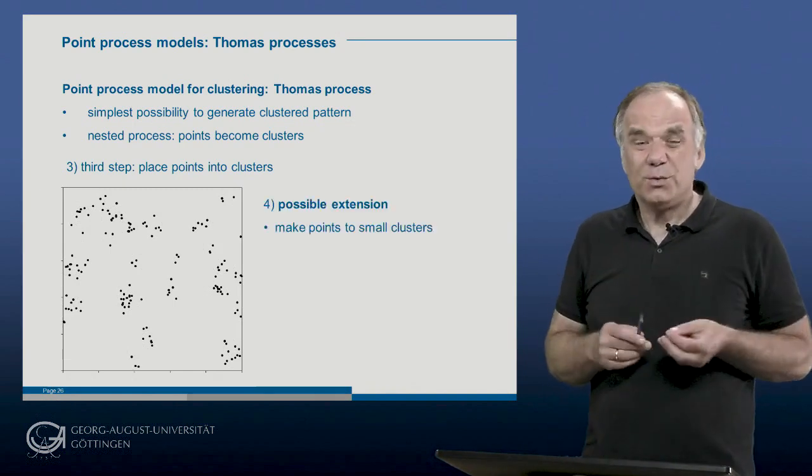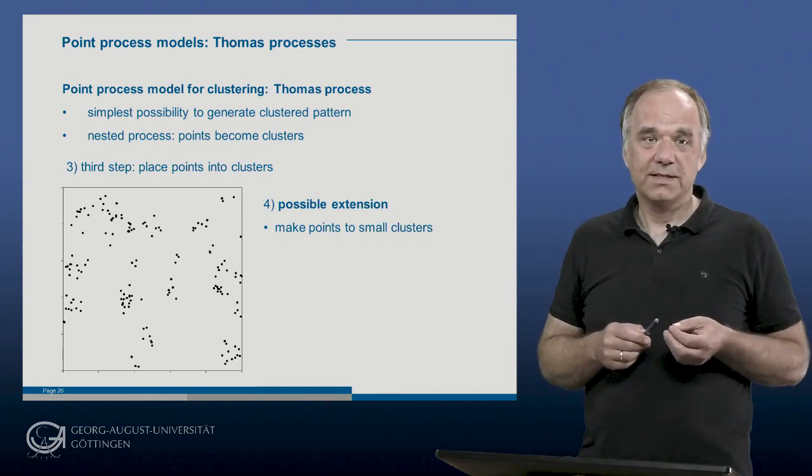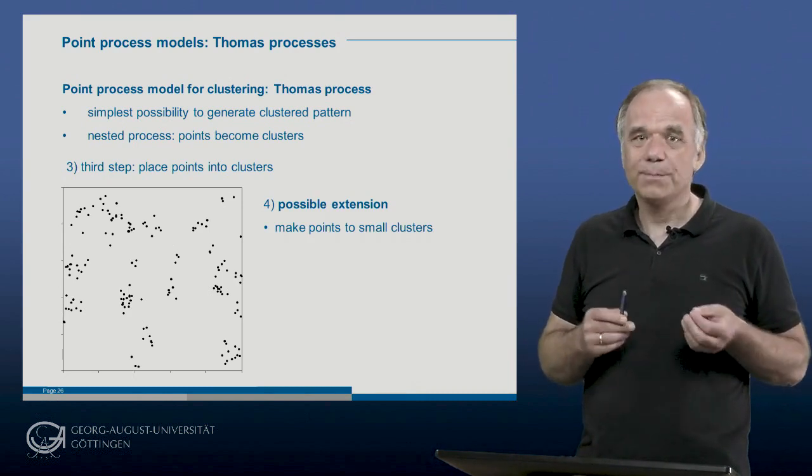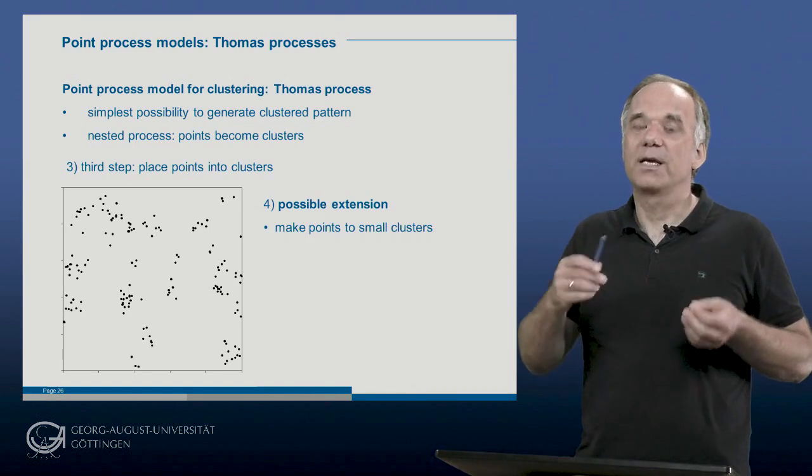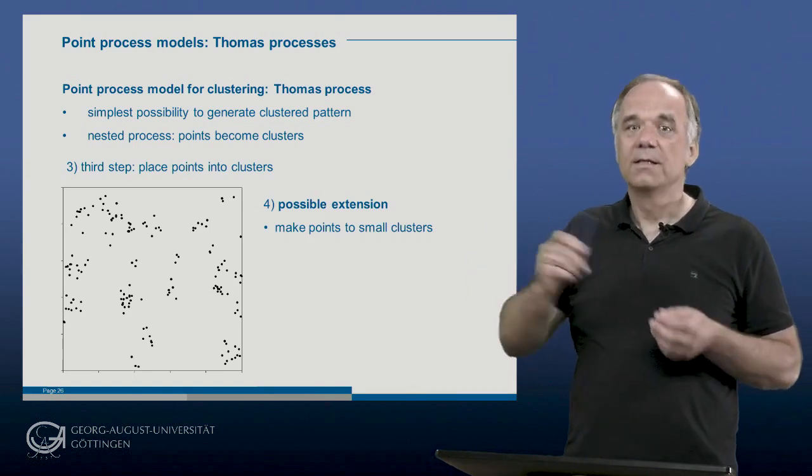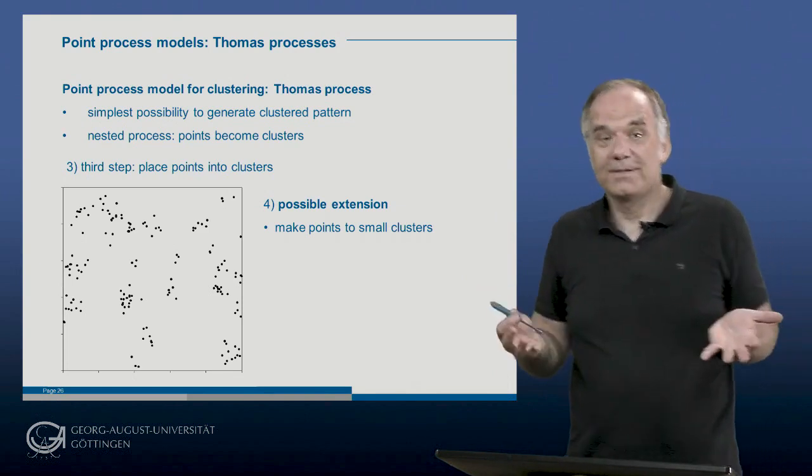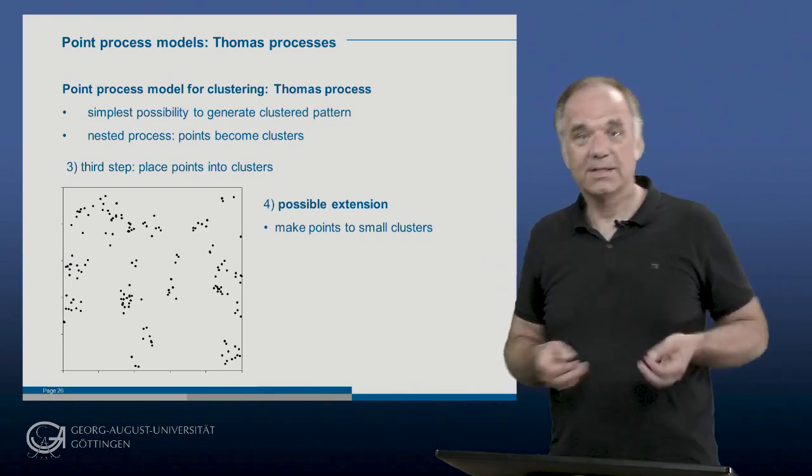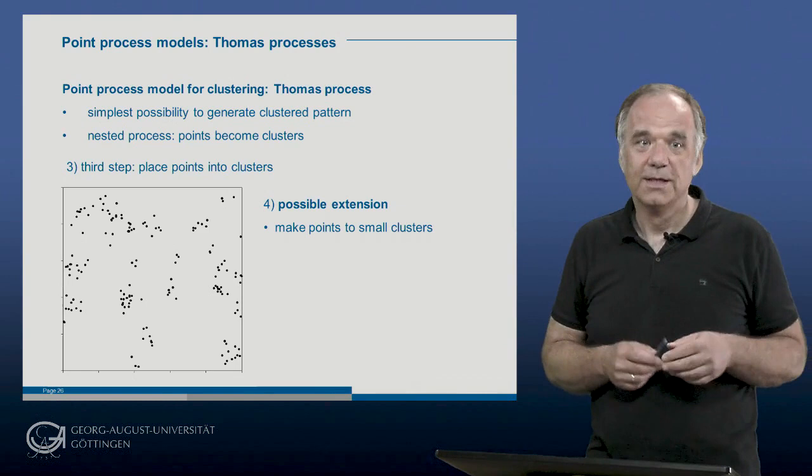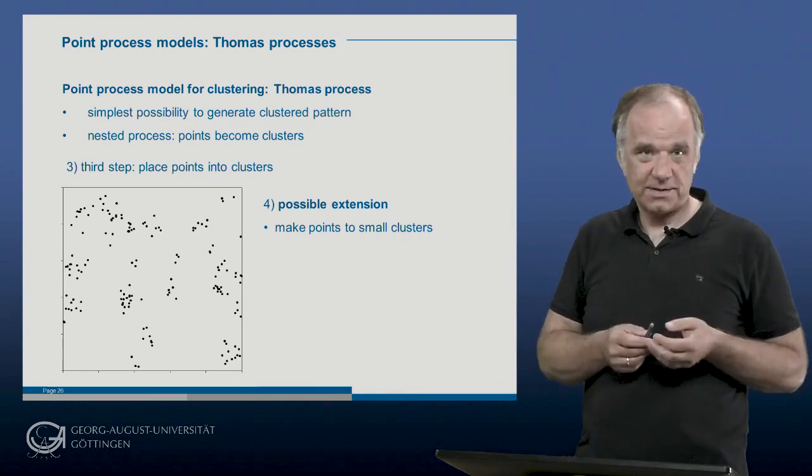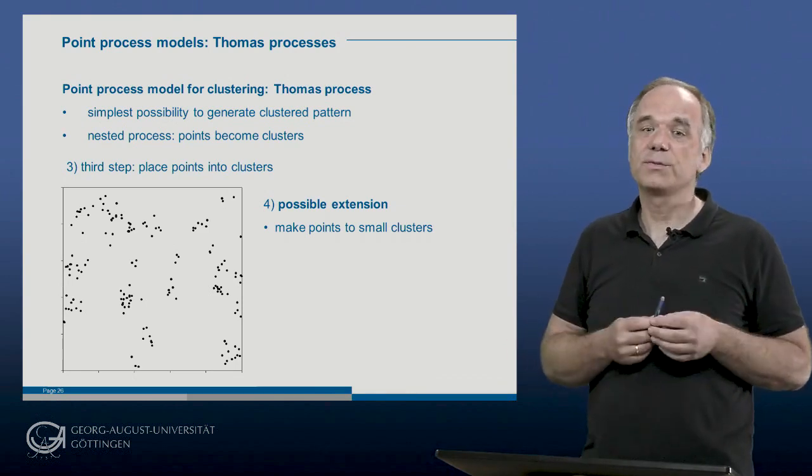It is even possible to extend the Thomas process and to use the clustered points themselves as parents of a second cluster generation. In this case, we have so-called grandparent points. These are the first random points. Then we have the parent points. This is a simple Thomas process. And then we have the offspring.